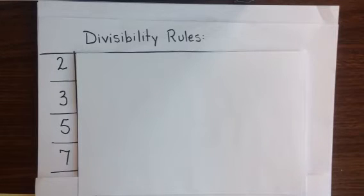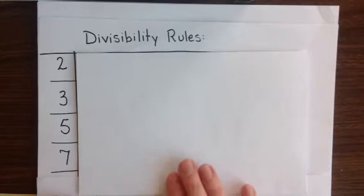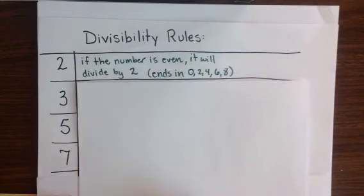So the first rule we're going to talk about is the rule for divisibility by 2. And that rule would be that if the number is even, it will divide by 2. Now you may not have ever thought of this before as a divisibility rule, but many of you are probably already familiar with the idea that even numbers, that being numbers that end in 0, 2, 4, 6, or 8, will divide by 2.